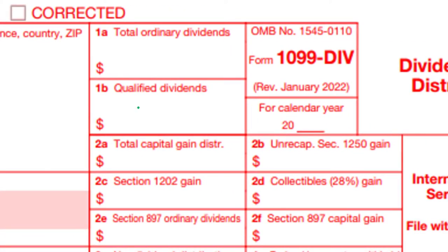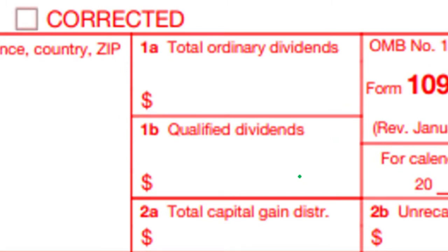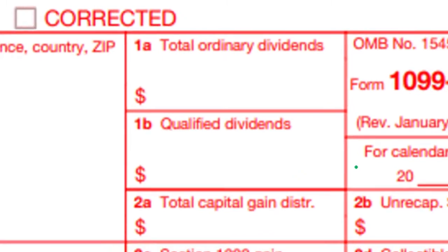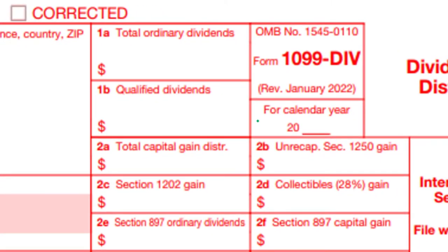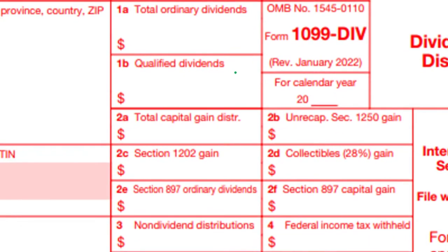These are the biggest boxes: box 1A is total ordinary dividends and then 1B is qualified dividends. If you saw a number in both of these boxes, we're not adding them together to get the total dividends. Box 1A is the total dividends, and then 1B is, of the dividends in 1A, the qualified dividends - which could have usually more favorable tax treatment.